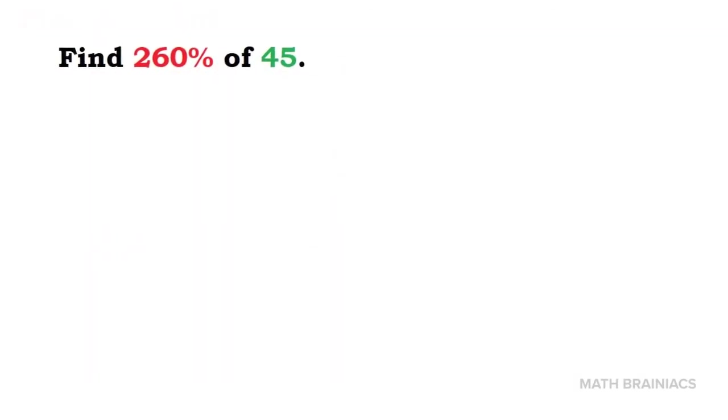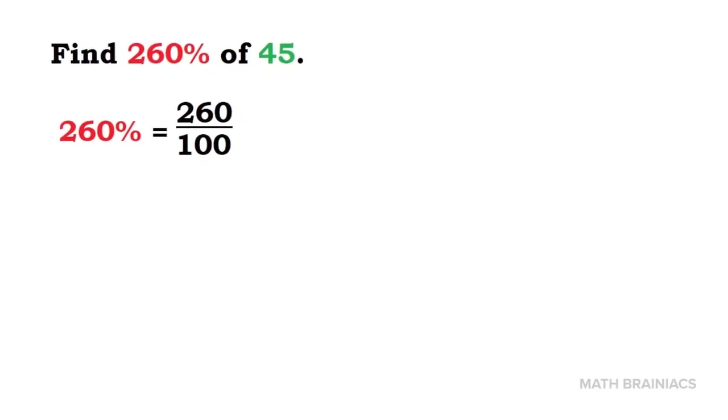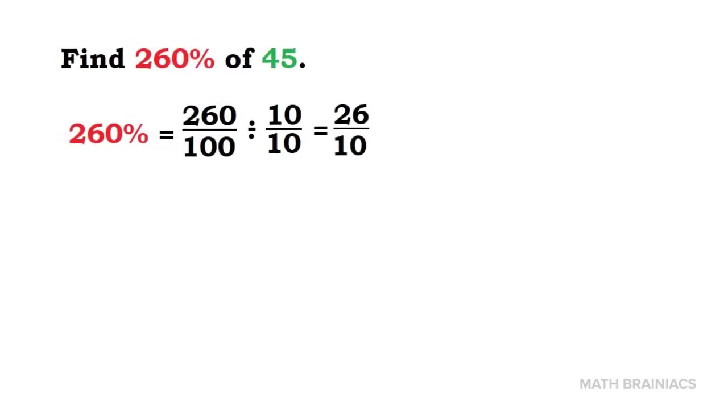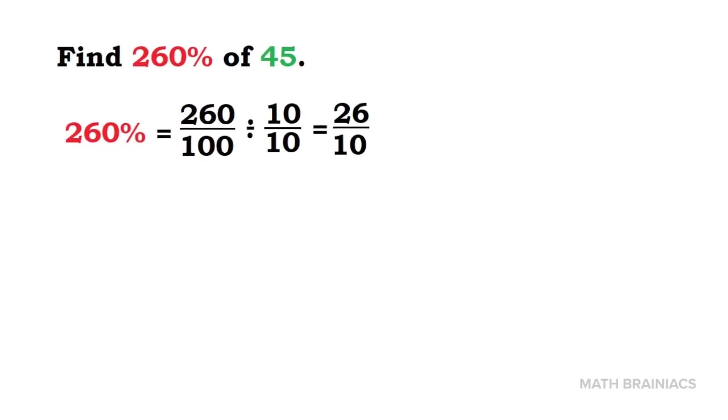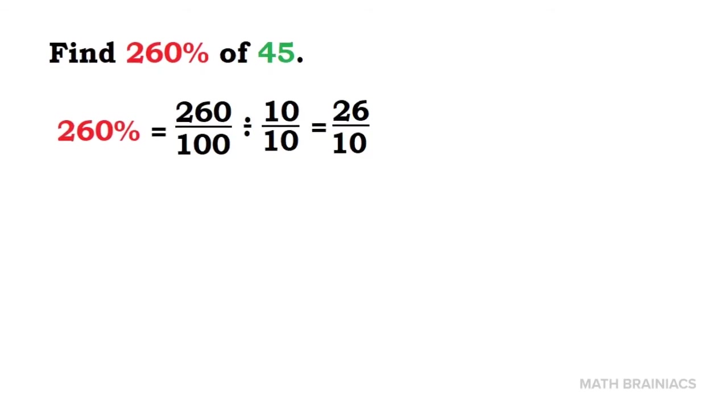Let us work on another example so that you can hit it off. Find 260% of 45. Converting 260% into fraction will give us 260 over 100. To find the simplest form of 260 over 100, we're going to divide it by the common factor which is 10. Accordingly, 260 divided by 10 is 26, and 100 divided by 10 is 10.